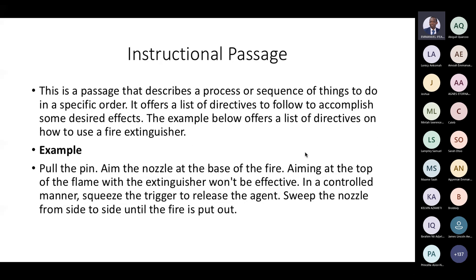An instructional passage describes a process or sequence of things to do in a specific order — technically a collection of imperatives. It offers a list of directives to follow to accomplish some desired effect. For example, directions on how to use a fire extinguisher: 'Pull the pin. Aim the nozzle at the base of the fire — aiming at the top of the flame won't be effective. In a controlled manner, squeeze the trigger to release the agent. Sweep the nozzle from side to side until the fire is put out.'